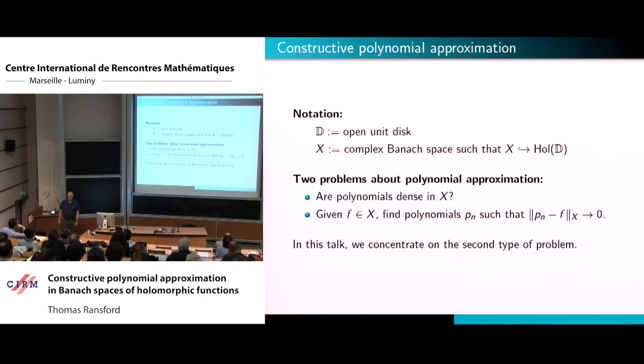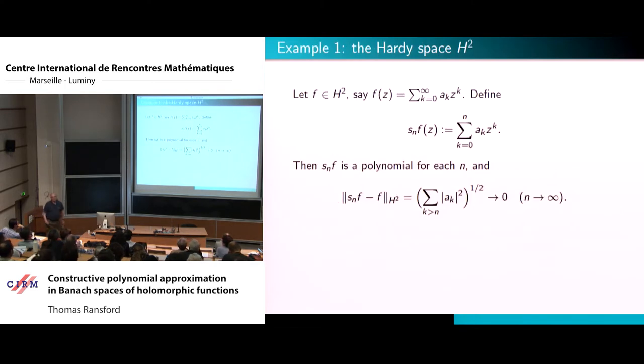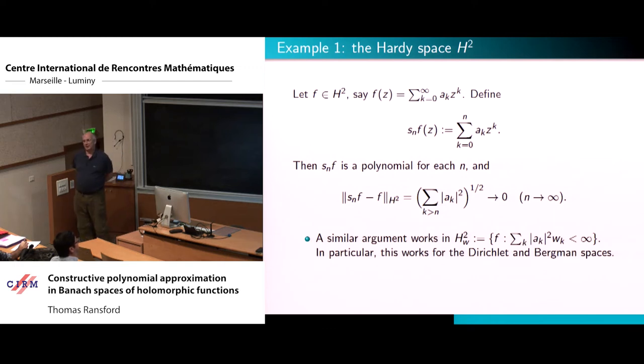So I want to illustrate this with a few examples. So to warm up, here's a really easy example, a Hardy space, H². And polynomials are dense in this space. And one way to prove it, probably the simplest, is just to expand the function as a Taylor series and truncate it. And if I call SN the truncation up to Z to the N, then obviously the SNs are polynomials. And they converge to F in the norm of the space, as this proves. So in fact, exactly the same argument works in any weighted Hardy-type space. So that takes care of other familiar examples, like the Bergman space or the Dirichlet space.